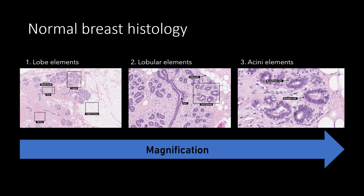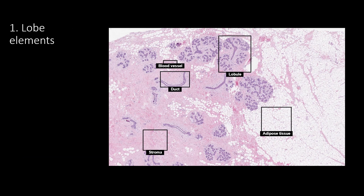Here's an example of that breast anatomy and histology. We have our lobe elements, lobule elements, and acini elements. Looking at the elements of the lobe, we see several lobules, blood vessels, ducts, adipose tissue, and some stroma.